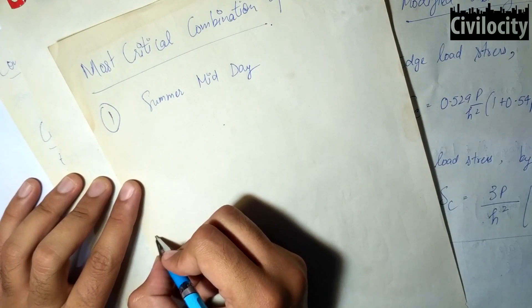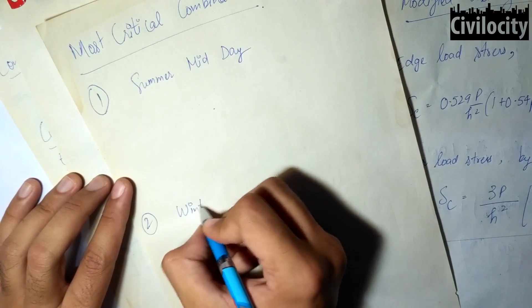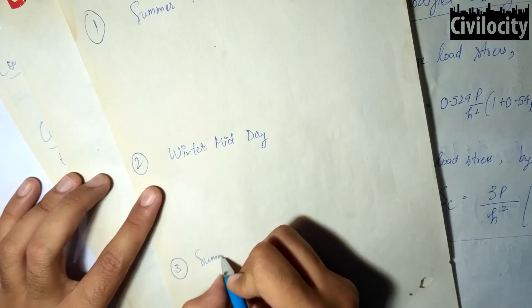There are three types of conditions: during the summer midday, during the winter midday, and during the summer midnight.